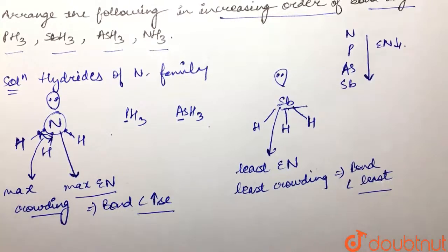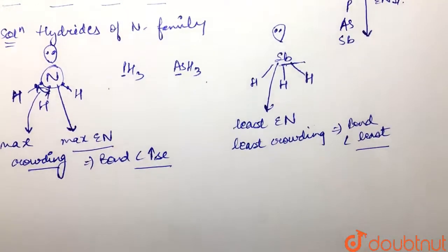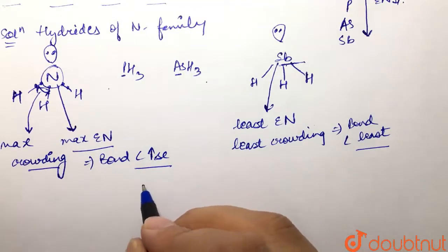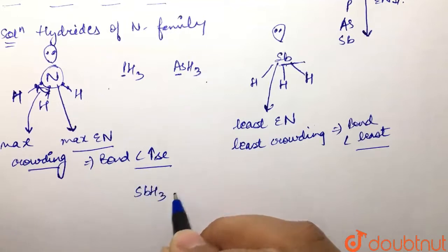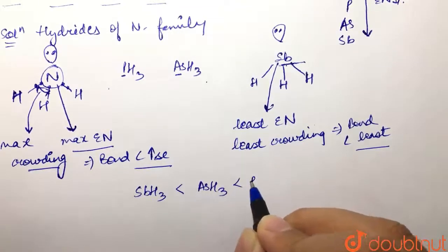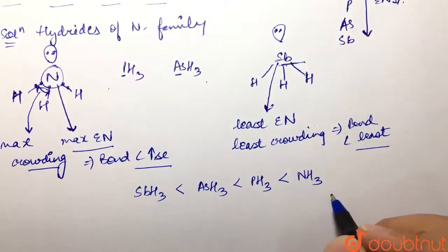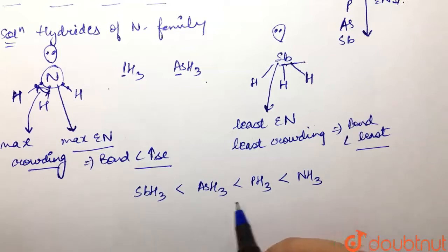So as we are moving down, our bond angle is becoming smaller. If we are to tell the increasing order of bond angle, the least bond angle is seen in case of SbH3, then we have AsH3, then we have PH3, and the maximum is seen in case of ammonia, that is NH3. So this is our increasing bond angle order.